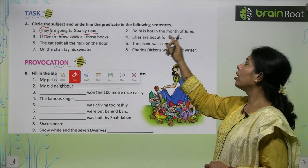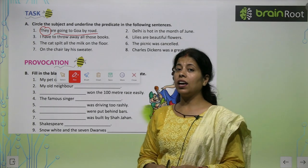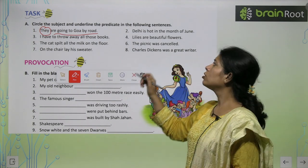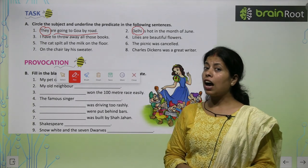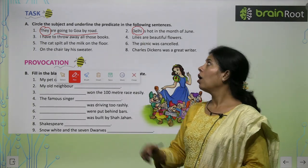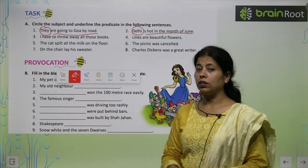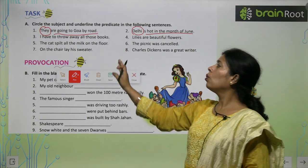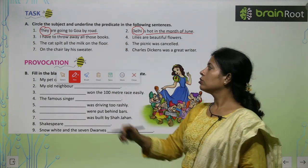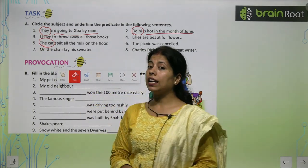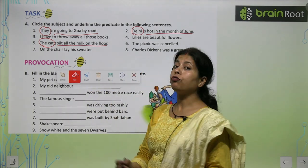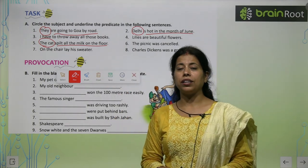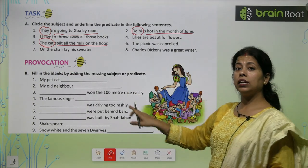Delhi is hot in the month of June. Kiske baare mein baat ho rahi hai? Delhi ke baare mein baat ho rahi hai. Delhi is our subject here. Or kya baat ho rahi hai? Is hot in the month of June — so this is our predicate part. The cat spilt all the milk on the floor. Kisne kiya? The cat — so the subject is the cat. And what did the cat do? Spilt all the milk on the floor. So like this, friends, we have to circle the subject and underline the predicate part.